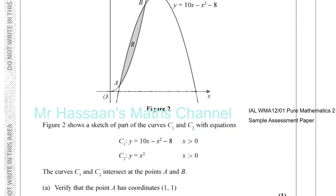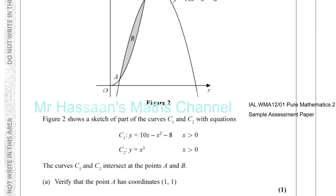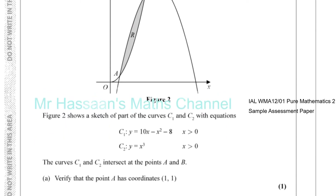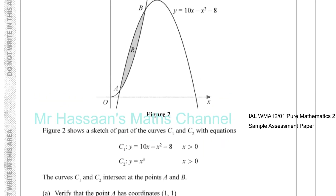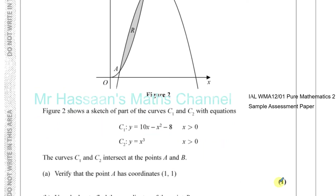The curves C1 and C2 intersect at the points A and B. They'll verify that the point A has coordinates (1, 1). For this part, they're not asking us to solve simultaneously because it's only worth one mark. We just substitute x equals 1 into one of those equations. So when x equals 1, using y equals x cubed, y is equal to 1 cubed, which is 1.